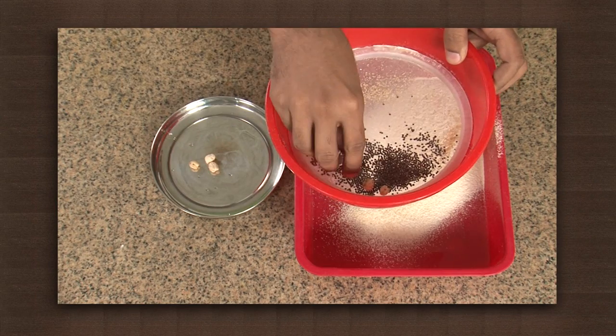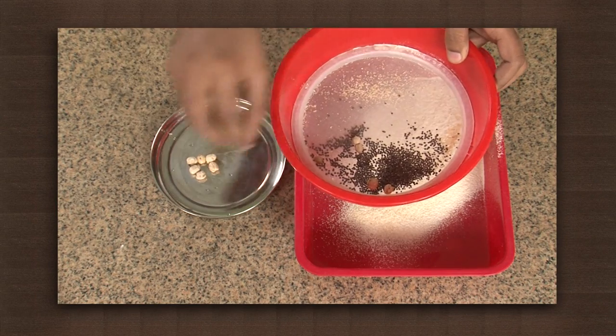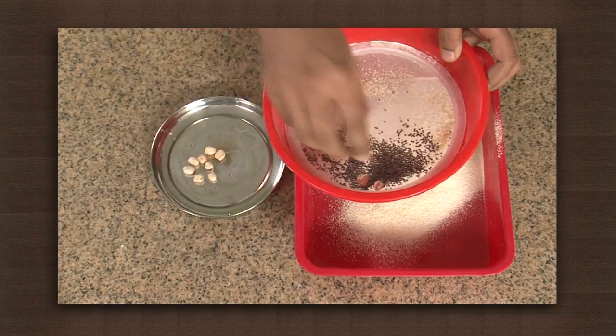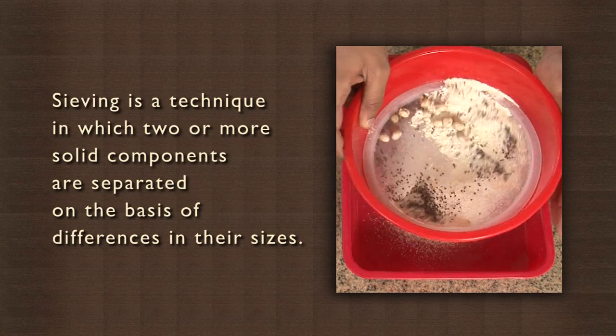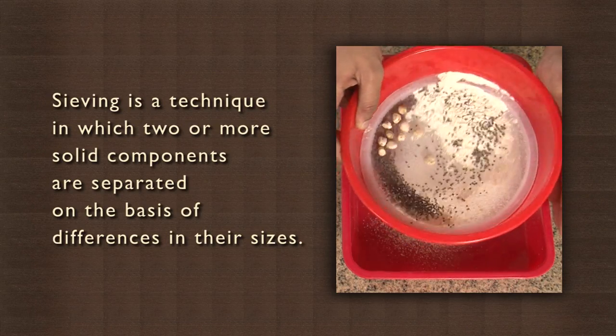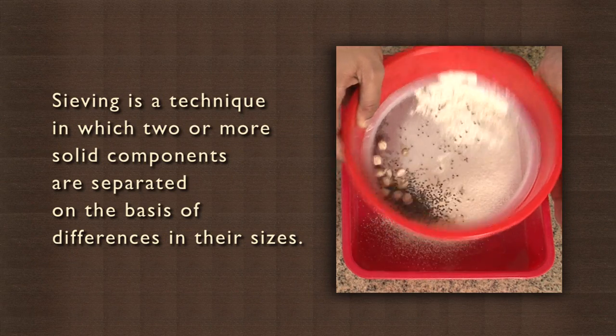So we just saw how we can use sieving and handpicking to separate objects from each other. Sieving is a technique in which two or more solid components are separated on the basis of differences in their sizes. Fishing nets act as sieves — they allow the water to drain out but keep the fish trapped in.